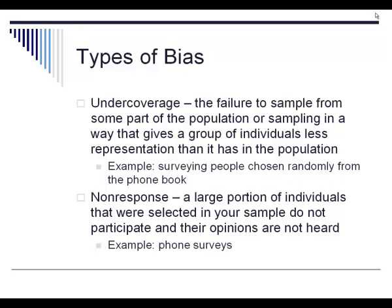The first two types of bias: under coverage. This is when you fail to sample some part of your population — where you're sampling in a way in which part of the population is given less representation than they should have. For example, if you're surveying everyone based on names drawn from a phone book, this would be under coverage of anyone whose phone number is not listed.